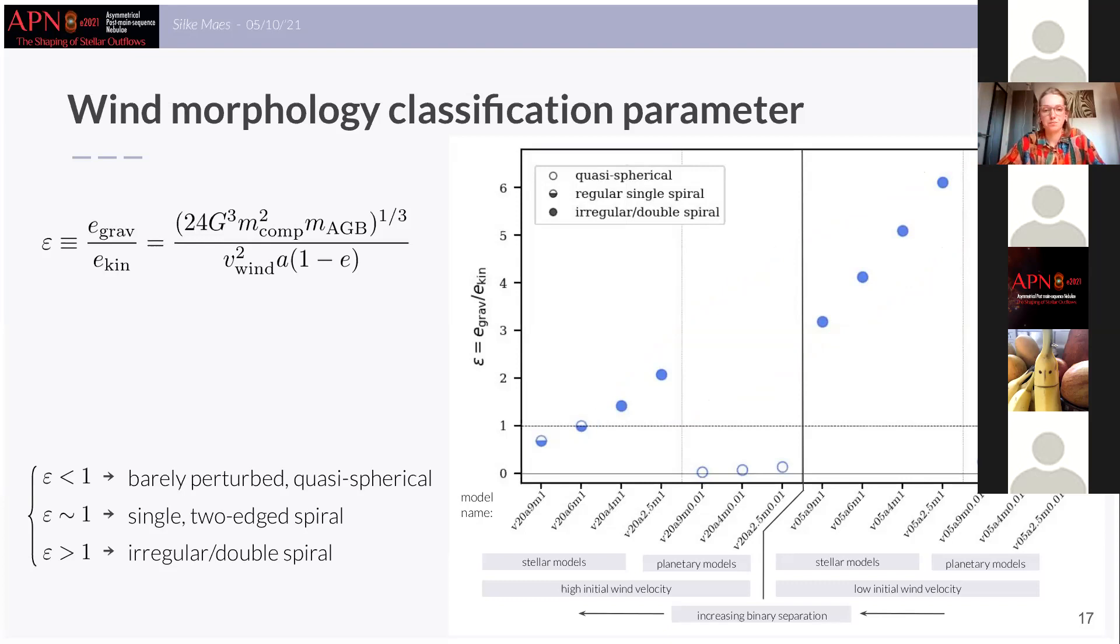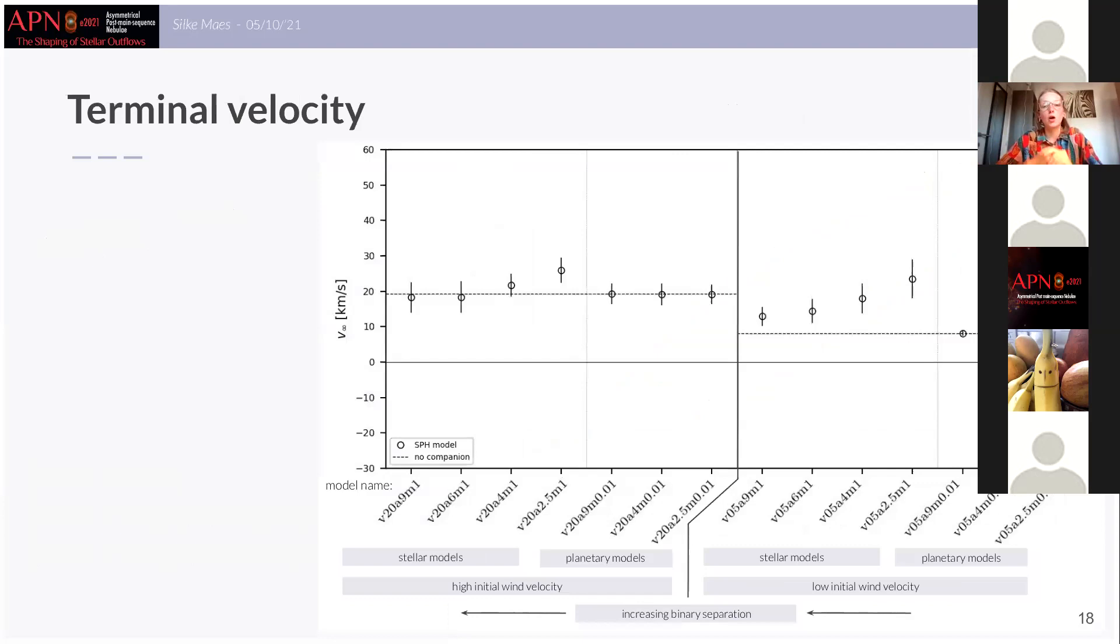And lastly, we investigate the effects of the companion on the terminal expansion velocity of the wind because of course this is an important observational property that we want to find for the HB winds. So in this graph I present again our 14 models and then on the y-axis in circles I present their terminal velocity and the dashed line is the terminal velocity of the simulation but then without a companion. And as you can see already here, it's clear that the companion does affect the terminal velocity.